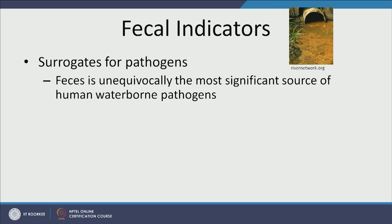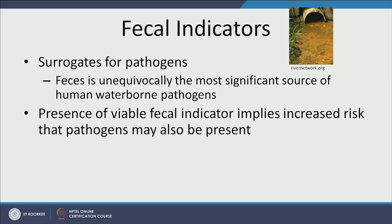Fecal indicators are surrogates for pathogens. Feces is unequivocally the single most important source of pathogens in water. If feces are present in the water, we are at higher risk of getting exposed to pathogens. An important word here is 'viable' — if a viable fecal indicator is present, it means we have a higher risk of falling sick. Viable means any microbe that is alive and healthy enough to replicate and increase in numbers.